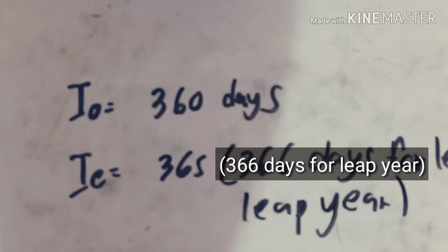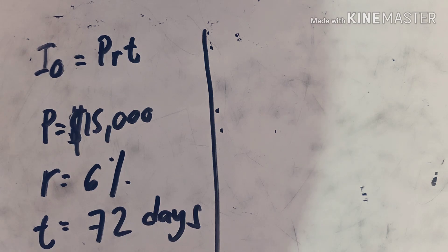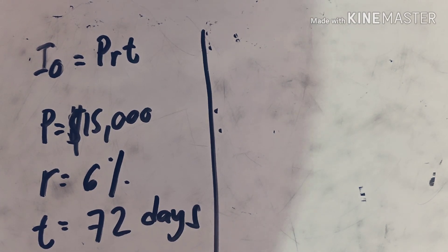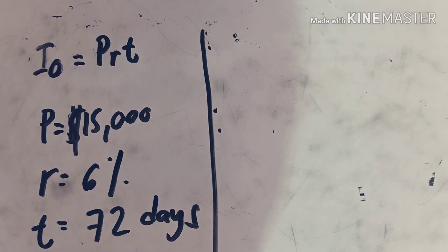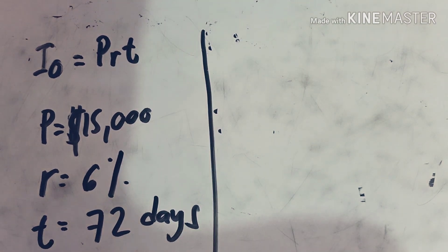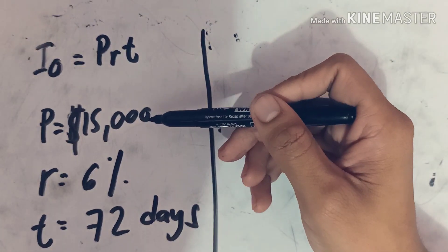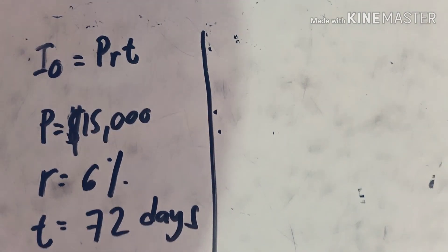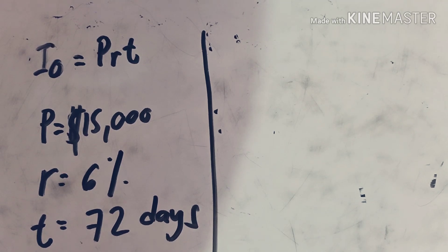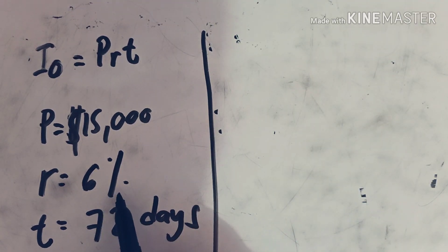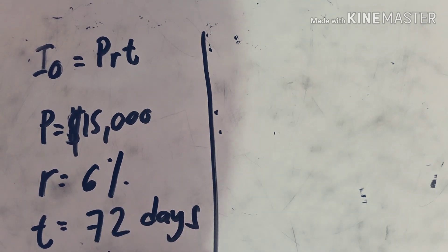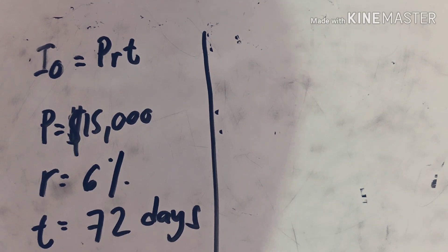These two kinds of simple interest are only applicable when the unit of time is in days. Now let's have an example. Let's say we have a businessman who loans $15,000 in the bank for the expansion of his restaurant. It was agreed that he will pay the amount with 6% interest rate in 72 days. The question is, what is the ordinary simple interest to be paid?